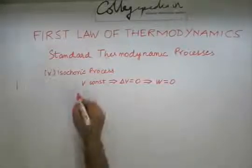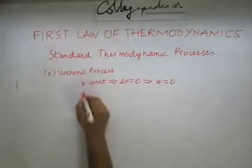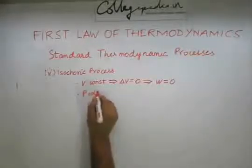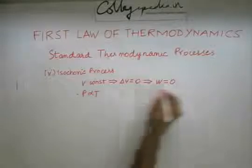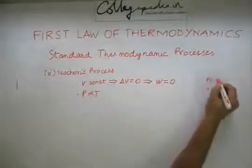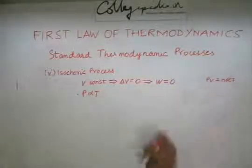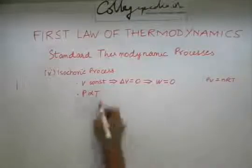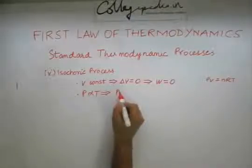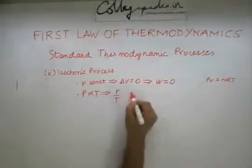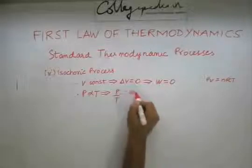Because V is constant, we will have P being proportional to T, as PV equals nRT. This will imply that P divided by T is also remaining constant.